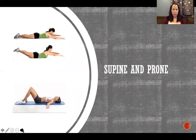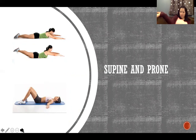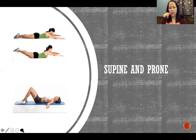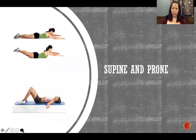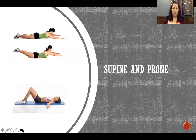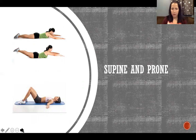Supine and prone. Supine means face up, prone means face down. When it comes to the forearm, you can think of supine as holding a bowl of soup, and prone as pouring the soup out. You can look at it that way for the whole body too — the body is face up, supine, holding a cup of soup, and then you pour it out, turn it over.